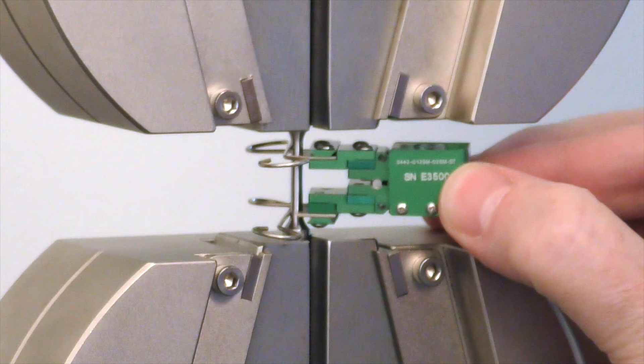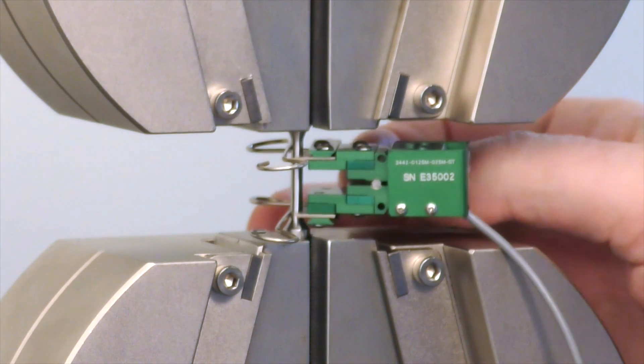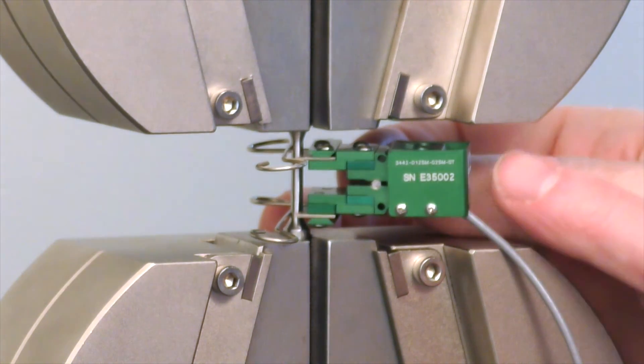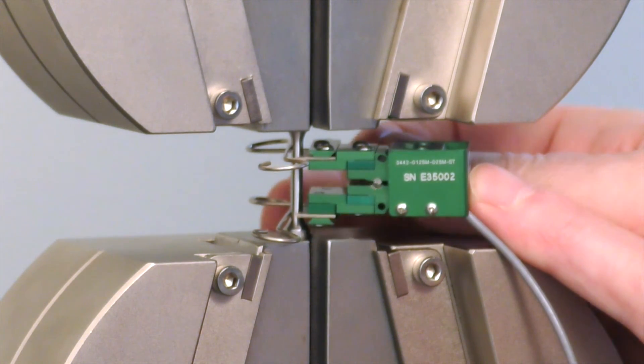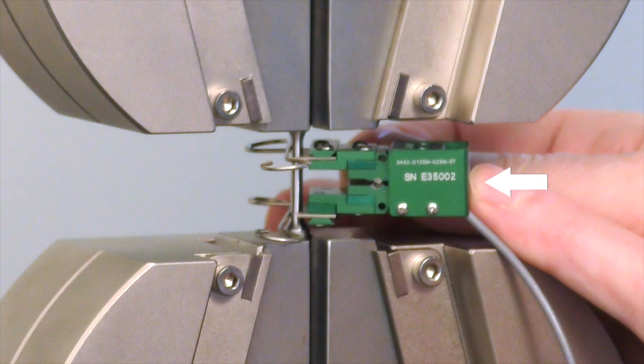Take care that the bottom knife edge does not move from the intended position on the specimen. Remove the gauge length pin. When testing hard and smooth materials, it may be necessary to press the extensometer onto the specimen to ensure that the knife edges don't move when removing the gauge length pin.